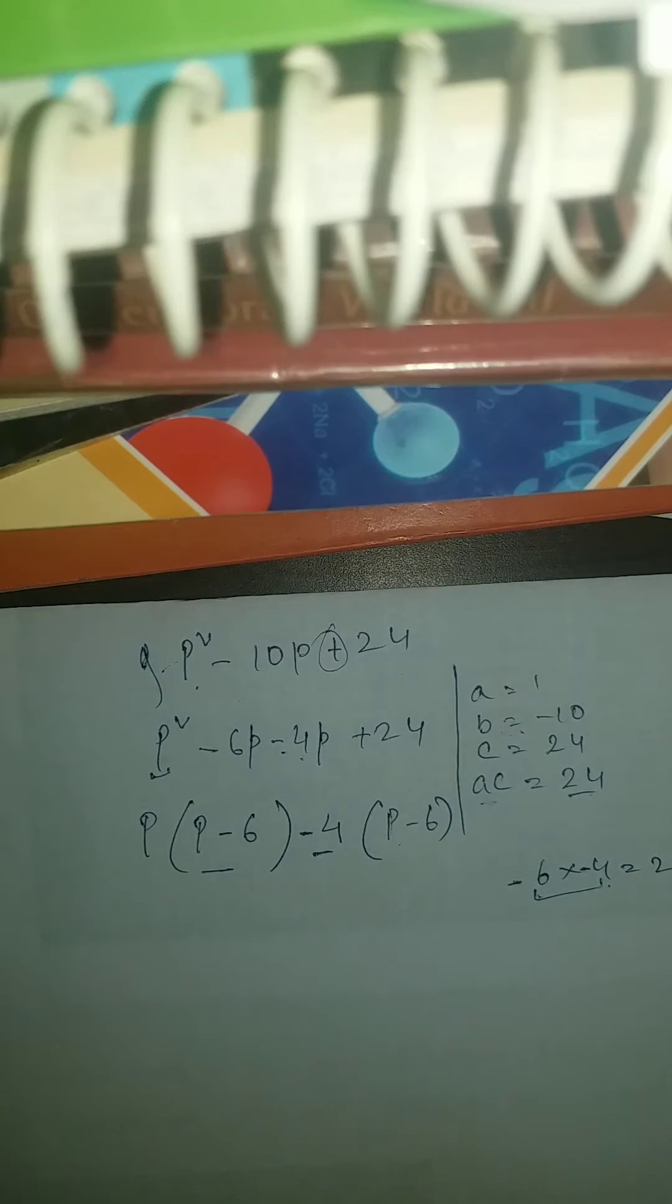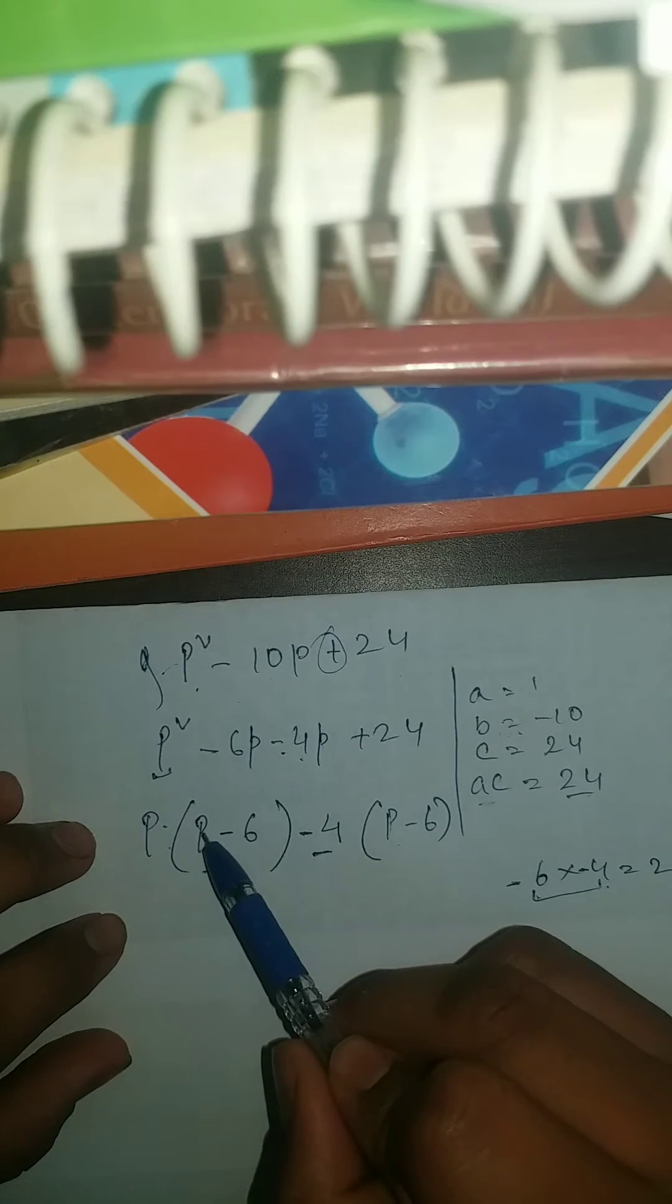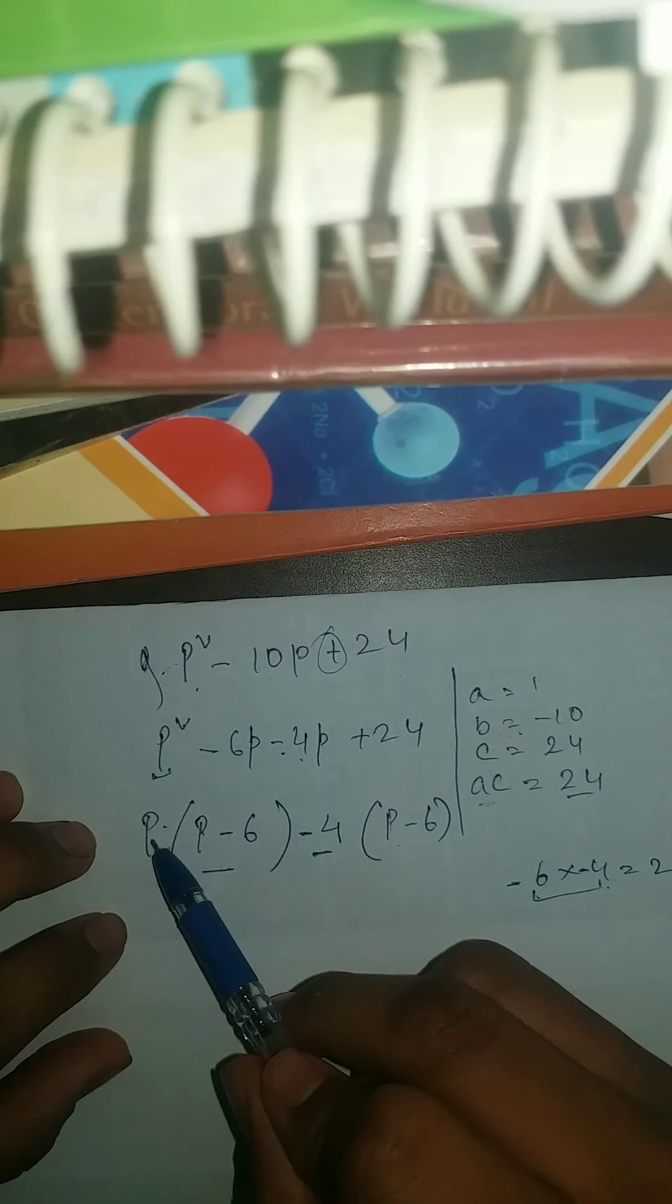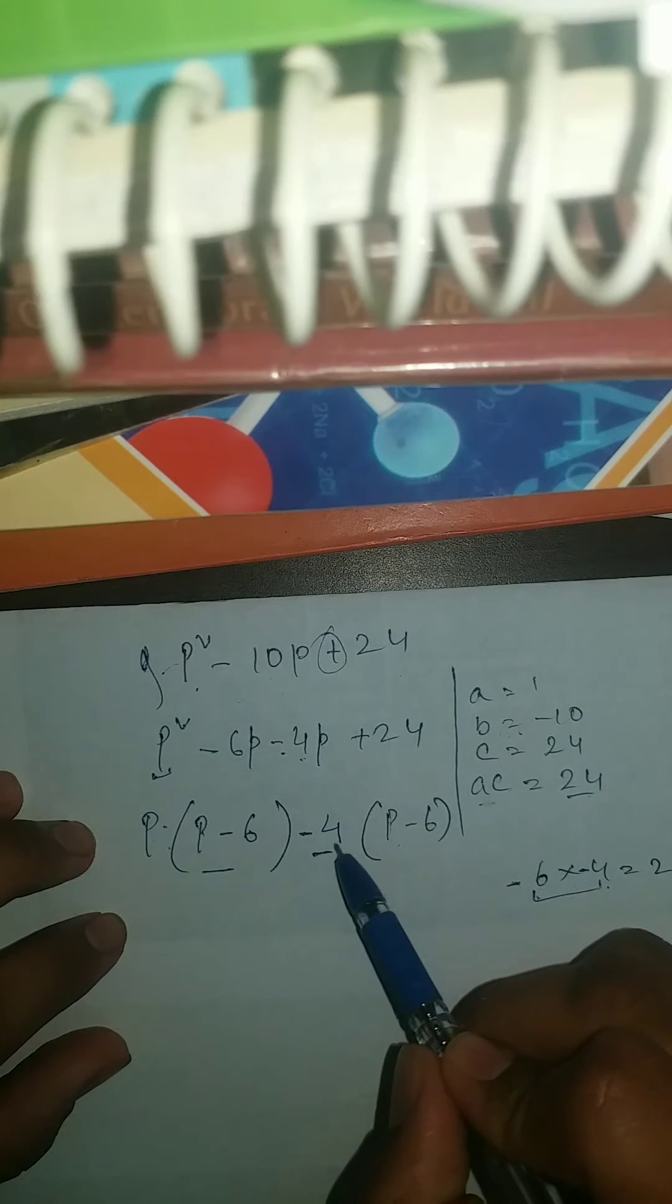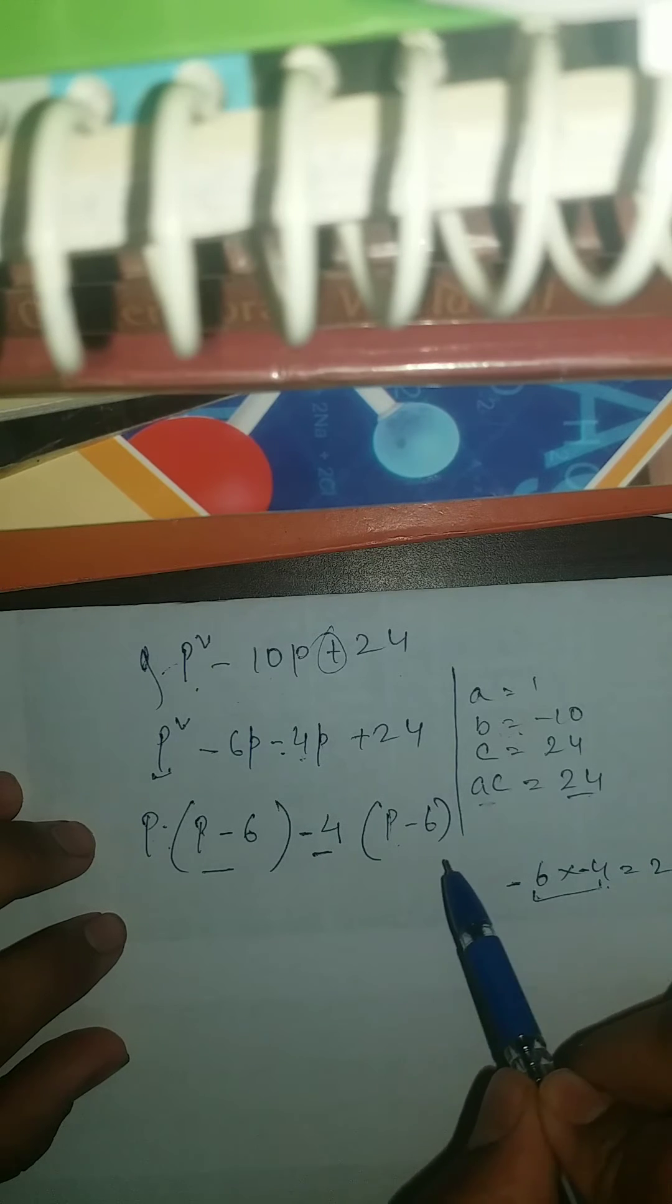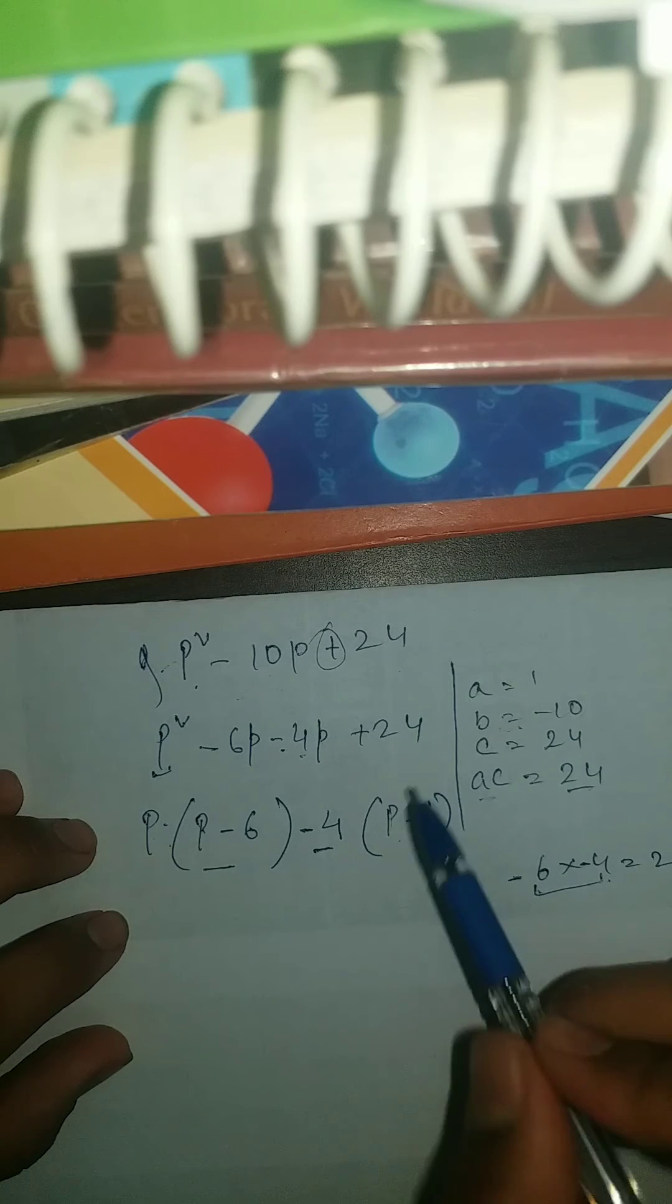So now to check this, what we will see. So we're gonna, P into P is your P square. P into minus 6 is your minus 6P. Again here, minus 4P. And minus 4 into minus 6 is your plus 24.